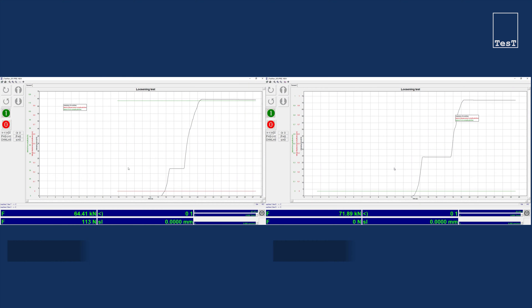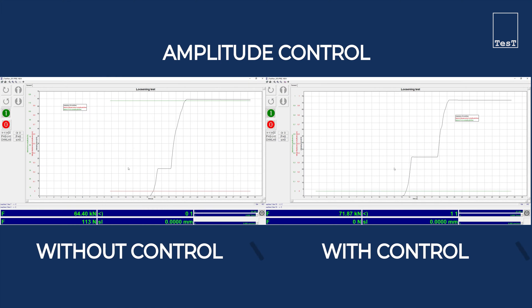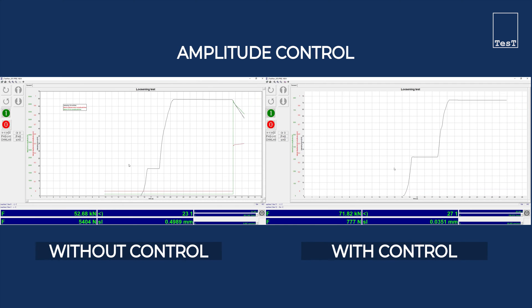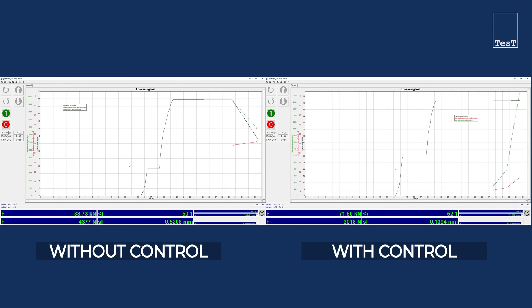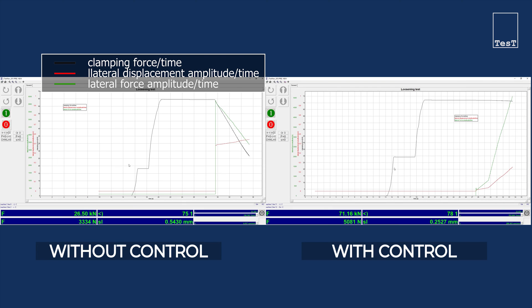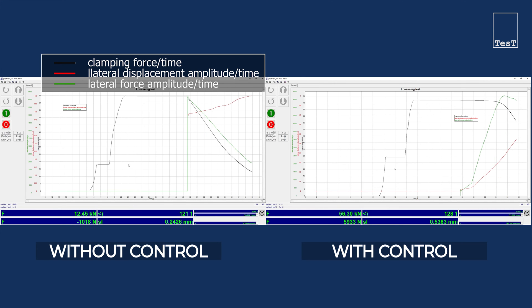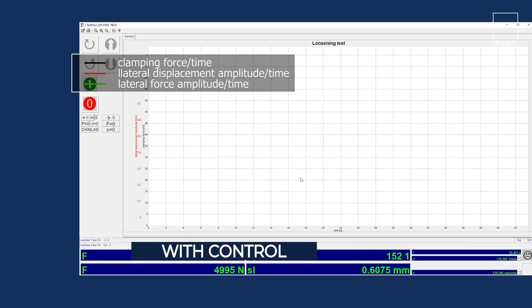In order to enable a more differentiated test setup, the transverse stroke can now be controlled in the closed loop as desired during the running test, because ultimately it is the forced transverse stroke that leads to the loosening of bolt connections.